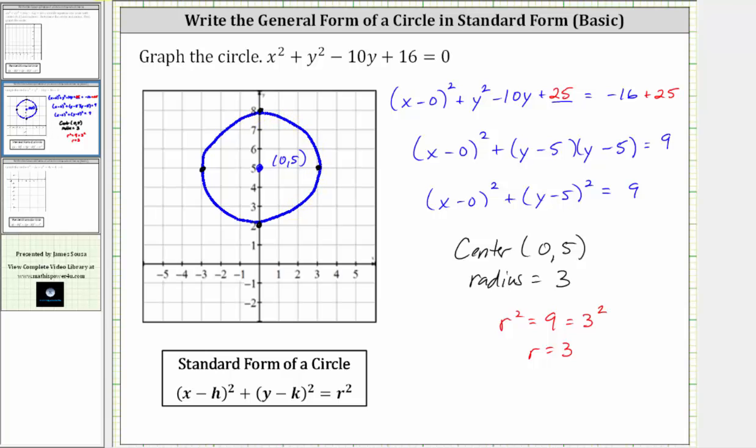Where again, (0, 5) is the center. And the radius, the distance from the center to any point on the circle is 3 units, which should be this distance here.